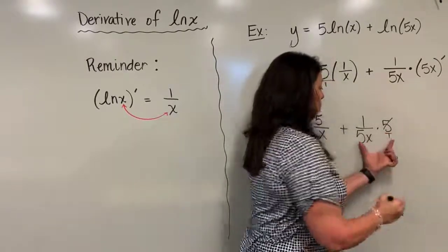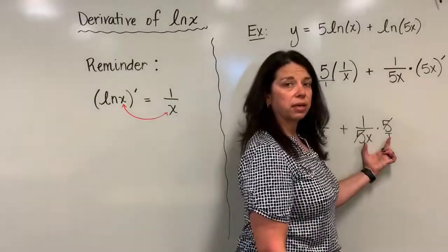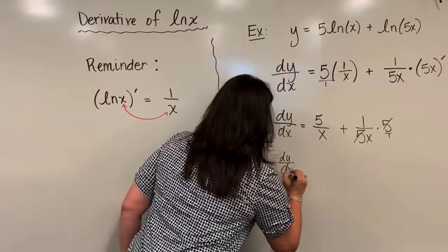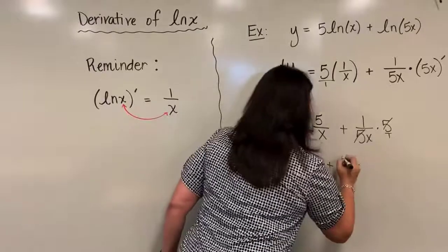Leaving me now with just dy over dx equals 5 over x plus, in this case, 1 over x. And if you really want to keep simplifying, you notice hopefully that you've got the same denominator here. They both contain an x. No biggie.